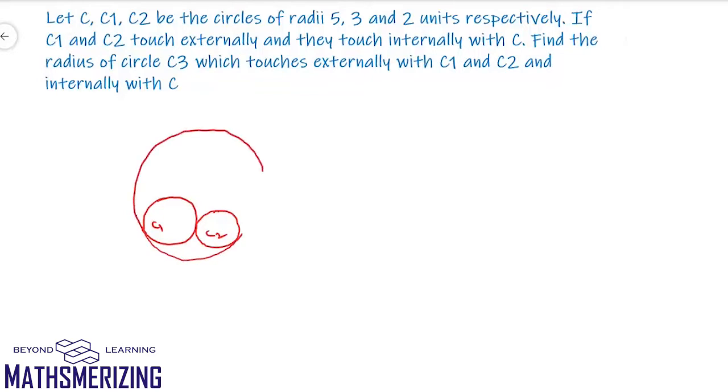So we have three circles that touch each other. Now there is another circle C3 which touches C1 and C2 externally and C internally. So there is another circle which touches C internally and C1, C2 externally. We have to find the radius of this third circle.